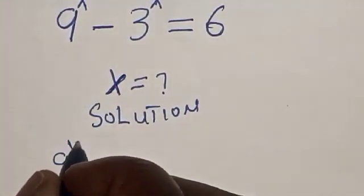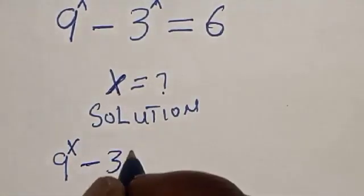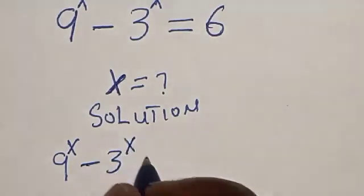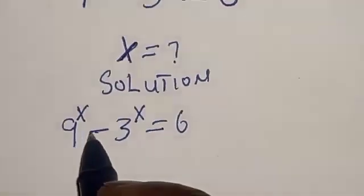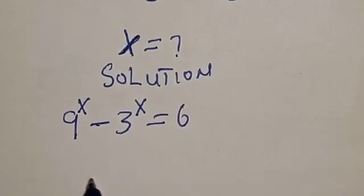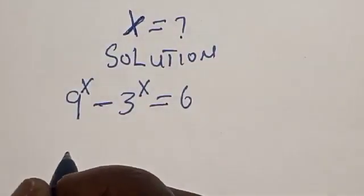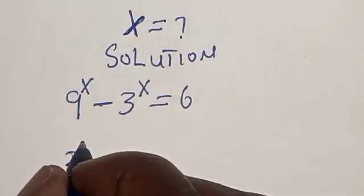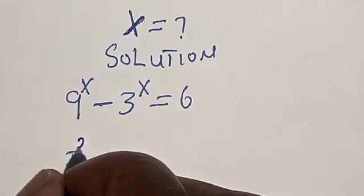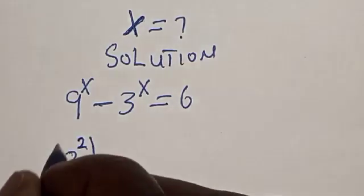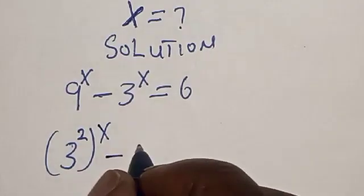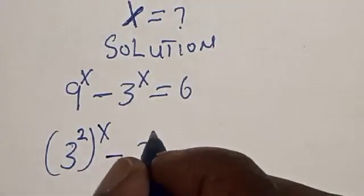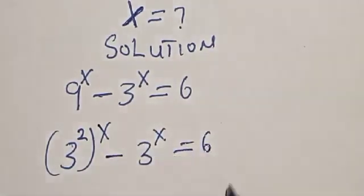9 raised to power x minus 3 raised to power x is equal to 6. We want to find the value of x from this equation. Now, 3 squared raised to power x minus 3 raised to power x is equal to 6.